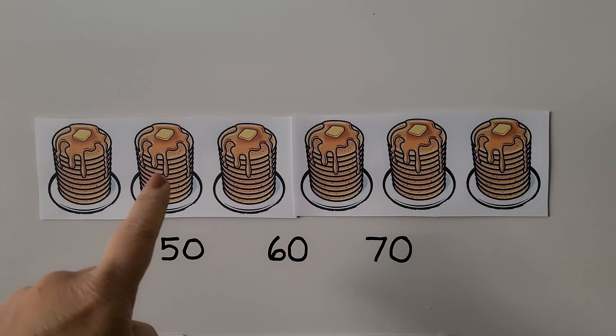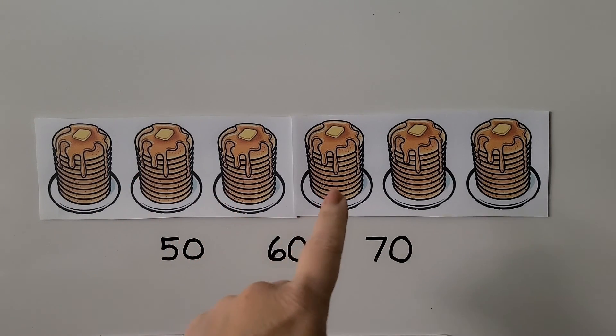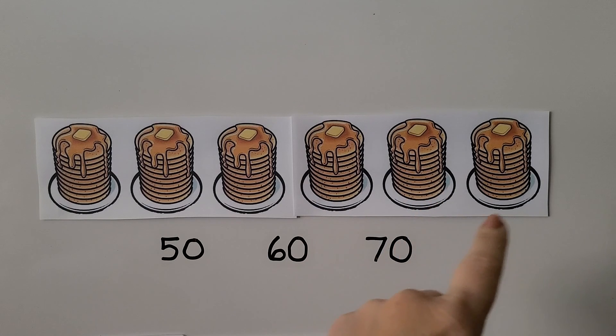We can count and point to each set of 10: 10, 20, 30, 40, 50, 60. There are 6 sets of 10. That's 60. We need to circle the correct number. It's 60. There are 60 pancakes. That's a lot of pancakes.